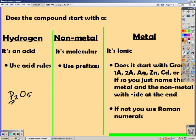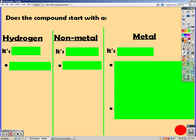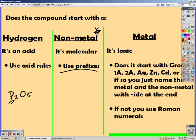If it's P2O5, it starts with P, which is a non-metal, so I use prefixes. If it's HBr, it starts with hydrogen, so it's an acid, and I use acid rules.